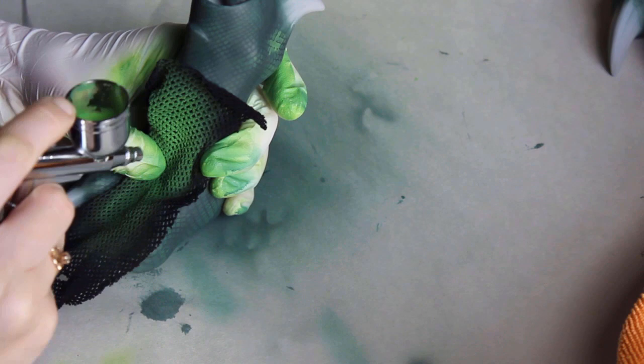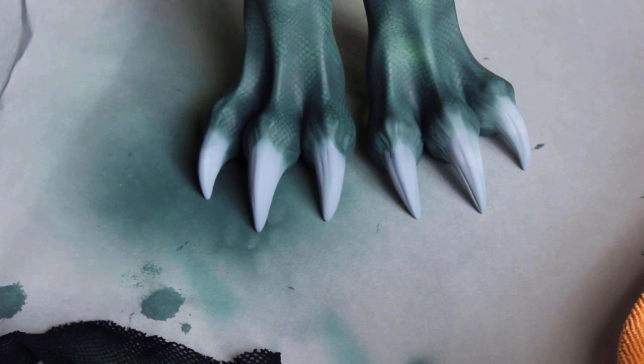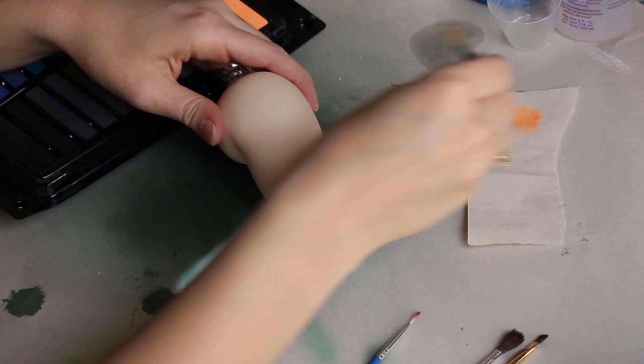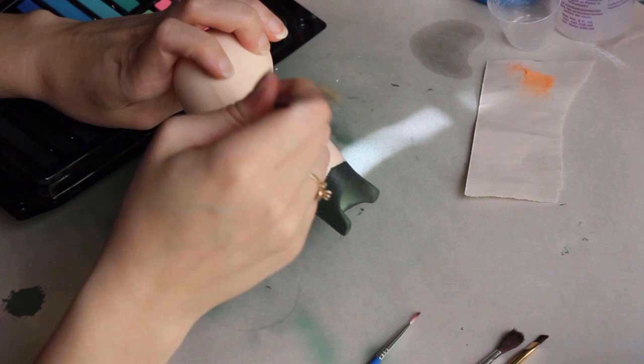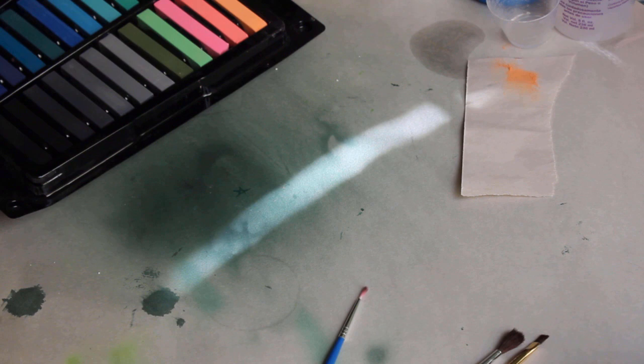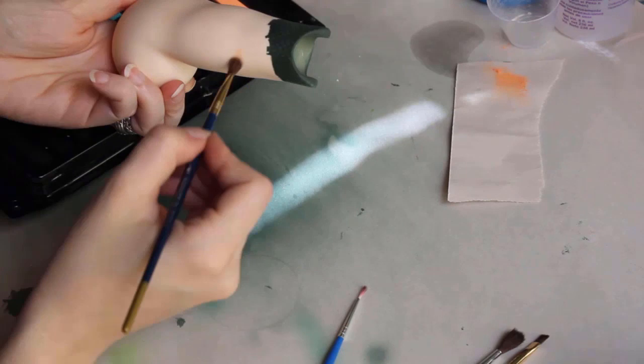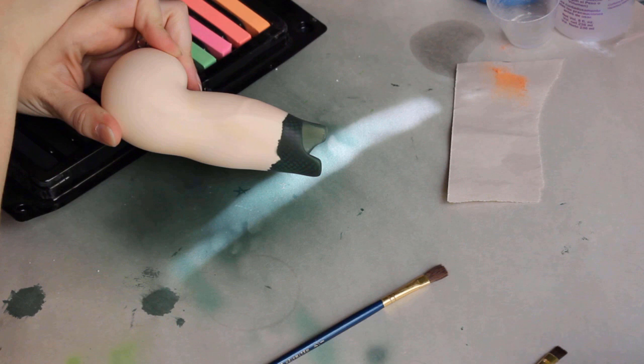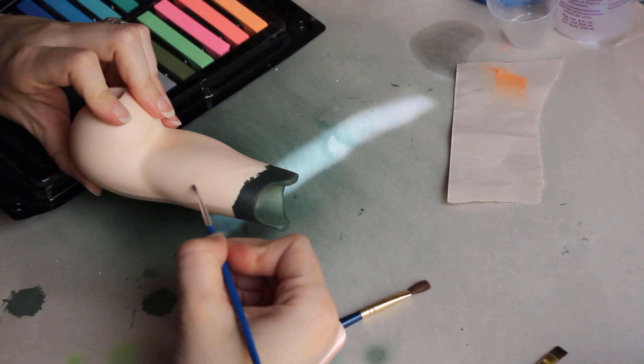When all the airbrushing on his limbs is done, I coat them in Purity Seal and add blushing with pastels. I use warm peaches for the flesh parts, and bright turquoise for the veins on his upper arms.